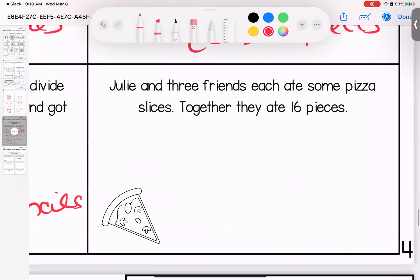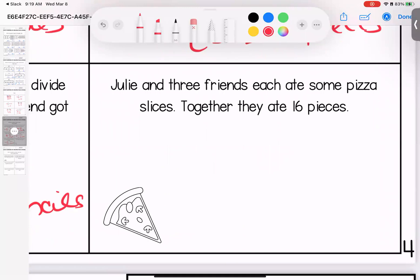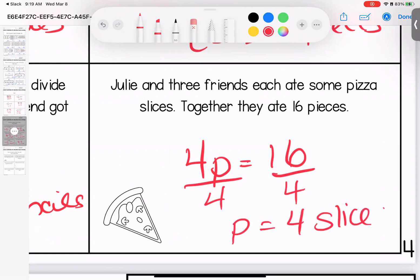Last one. Julie and three friends each ate some pizza slices together. They ate 16. So Julie and three friends, that's four people, they ate some pizza. When they were done, 16 pieces were gone. Sticky numbers, I divide. They each ate four slices. Any questions on this, Nuggets? Bring them with you to class.